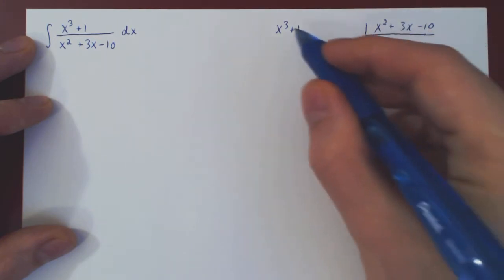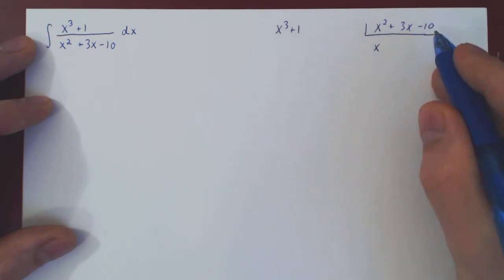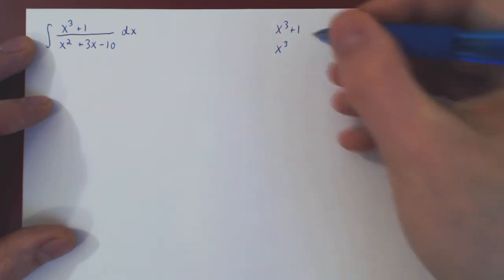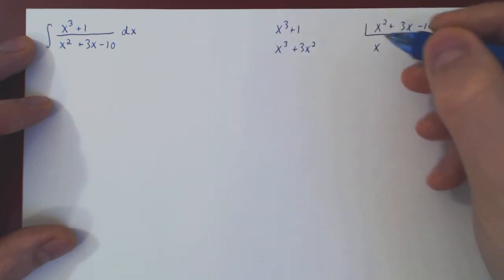What times x squared gives x cubed? Simply x. Multiply through by x, which gives you x cubed, plus 3x squared, minus 10x.